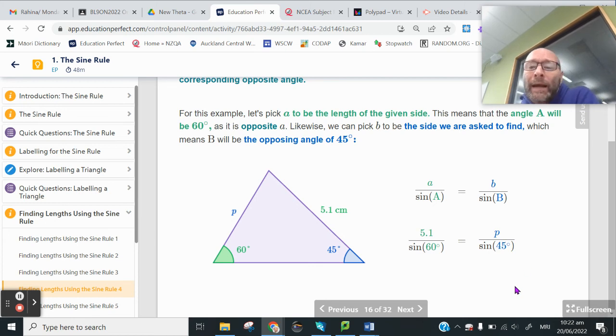Now here is where your algebra skills are going to come in handy. I want to get this P all by itself. Currently, the P is being divided by the sine of 45. Well, how do you undo dividing? Hopefully you said multiplication.